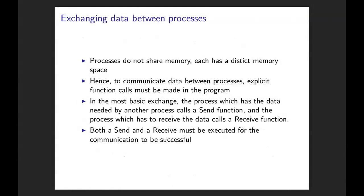The processes MPI creates each have distinct memory spaces, so they cannot directly access each other's data. If you need to send data between one process and another — and almost always you do, because your processes have to coordinate and exchange data — you need explicit function calls on both sides: a send function on the process sending the data and a receive function on the process receiving the data. For communication to successfully complete, both a send and a receive must be executed respectively.